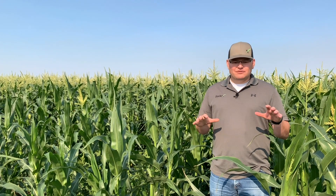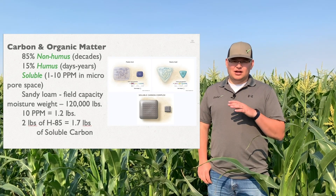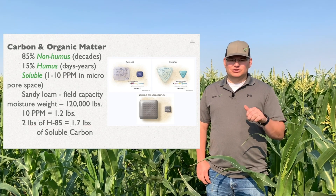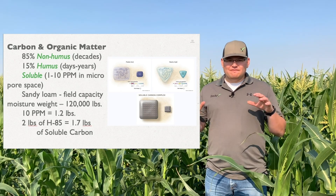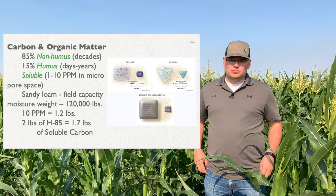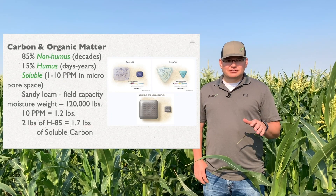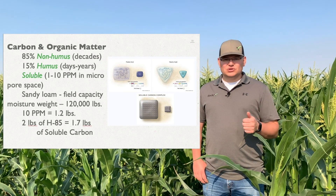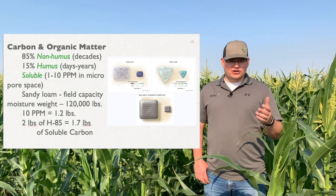Now let's talk about soluble carbon. Not all carbon in the soil is created equal — you can't directly translate it to organic matter. Roughly 85% of the organic matter percentage on your soil test is non-humus, which takes decades to break down into soluble carbon dissolved in the soil solution. Of the remaining 15% that is actual humus, it breaks down relatively quicker — anywhere from days to years — depending on the health of your soil, weathering, moisture, and microbial activity.